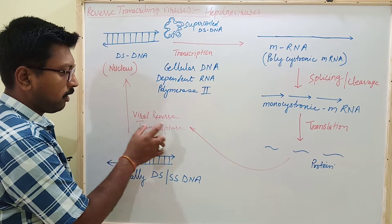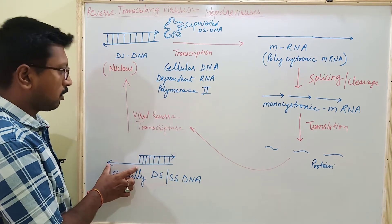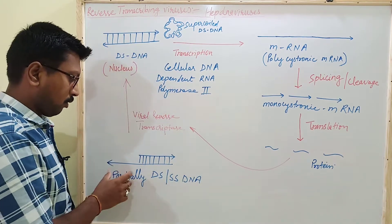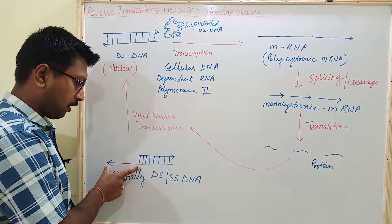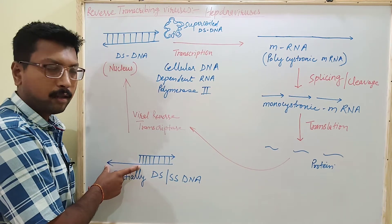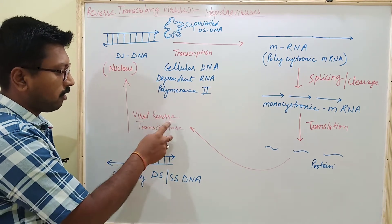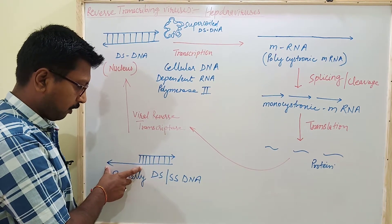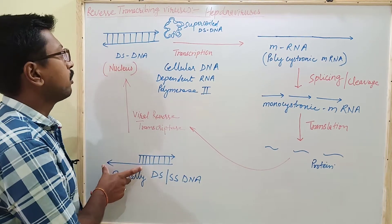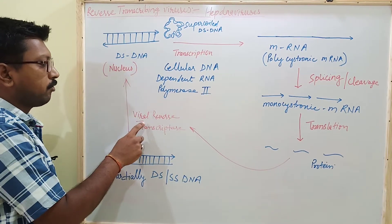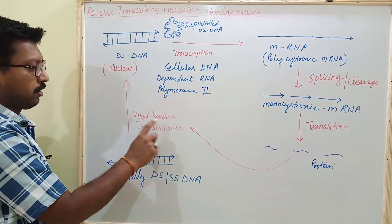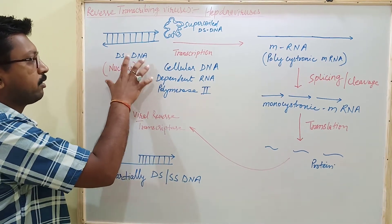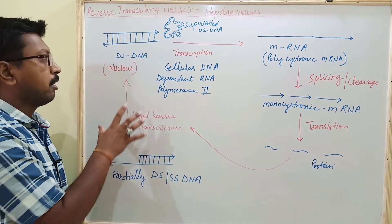This partially single-stranded DNA, using viral reverse transcriptase, is first converted into double-stranded DNA. The negative-sense single-stranded DNA acts as a template, and with the help of viral reverse transcriptase enzyme, this partially negative-sense DNA is converted into double-stranded DNA using viral reverse transcriptase enzyme.